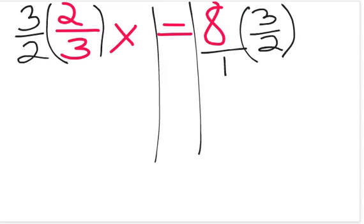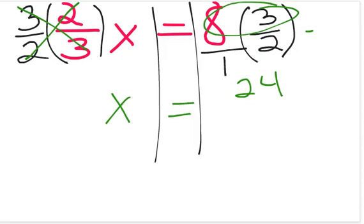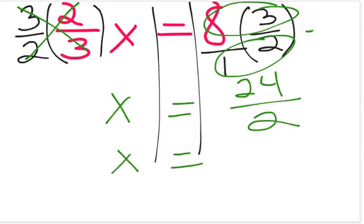On the left side of the equation, I have 3 divided by 3 cancels out as 1, and 2 divided by 2 cancels out, leaving the x by itself. On the right side, I have 8 times 3, which equals 24, and then 1 times 2, which equals 2. For my last step, I'll simply divide or simplify. 24 divided by 2 equals 12.